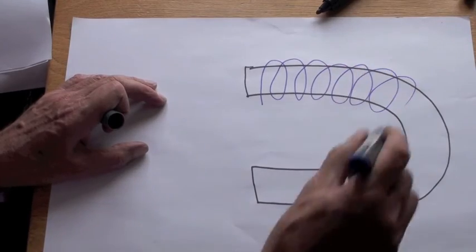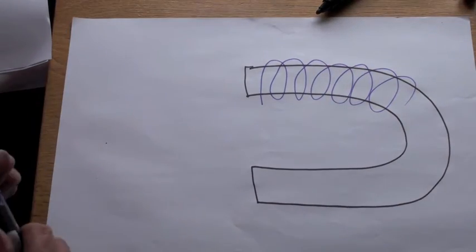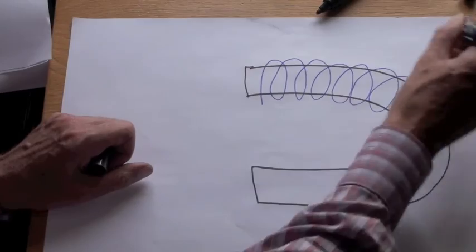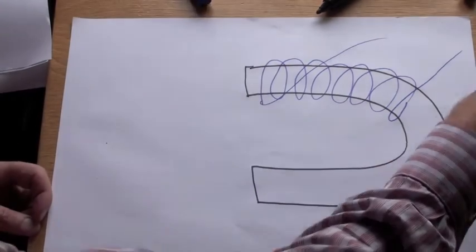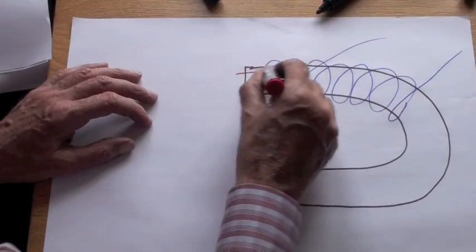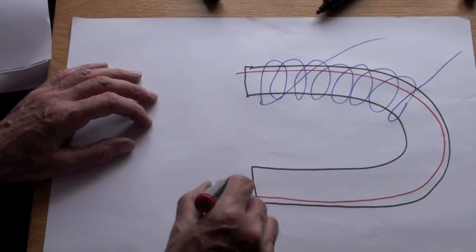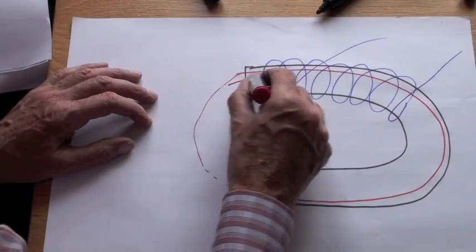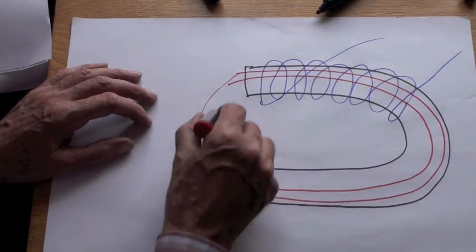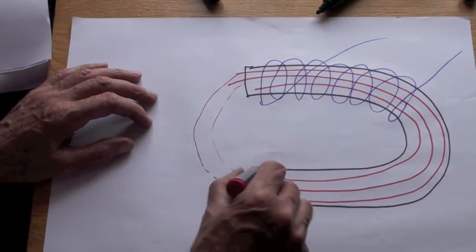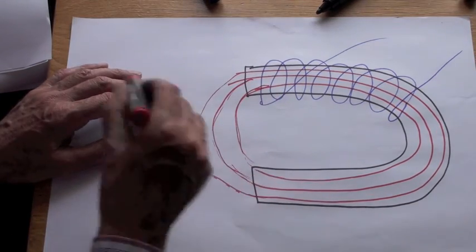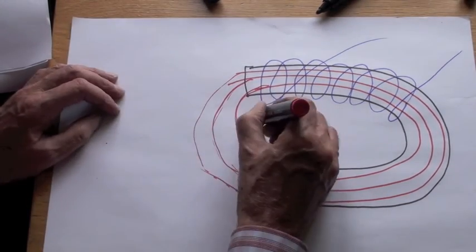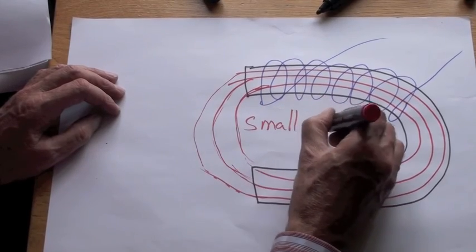If instead of having a straight iron core we had one which was horseshoe shaped, then the magnetic field created by the current flowing through the coil would largely be within the iron core and only a small amount of it would pass through the air. The magnetic field would therefore be a great deal stronger. Stronger still. That's why strong permanent magnets and electromagnets are usually this shape. Thank you for watching.